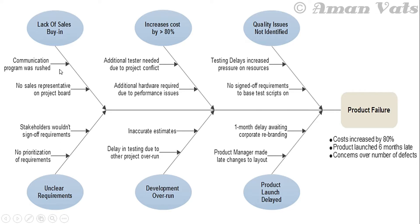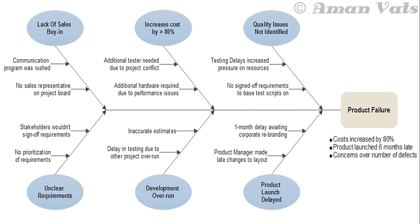For lack of sales buy-in: communication problem, was rushed, no sales representative on project board. For example, to discuss lack of sales buy-in, you hold a brainstorming session, people identify the problems, you select the common ones and put them there. Similarly, you do this for unclear requirements, development overrun, and product launch delayed. All these issues finally resulted in product failure — now you know what caused your product to fail.